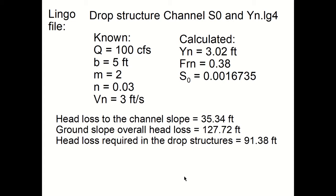In this case, the known information is: Q equals 100 cubic feet per second, the bottom width of the trapezoid is 5 feet, the side slope is 2, the roughness coefficient is 0.03, and the velocity is 3 feet per second. Then you can calculate the normal depth of 3.02 feet, the Froude number at the normal depth.